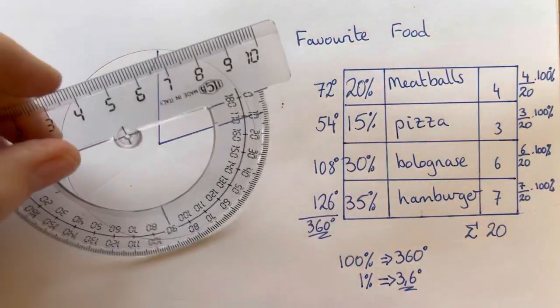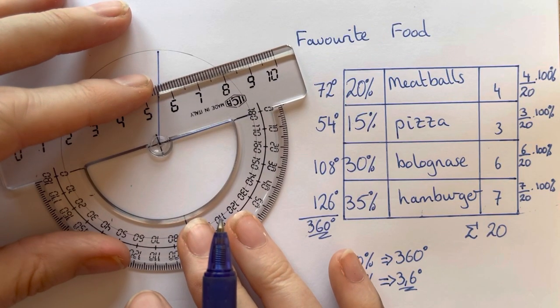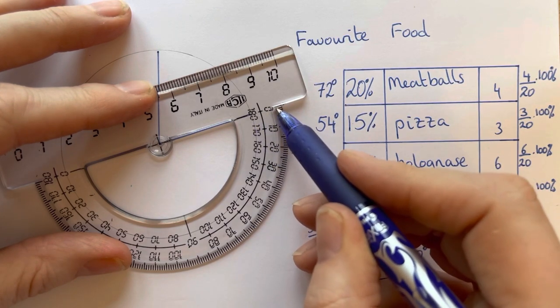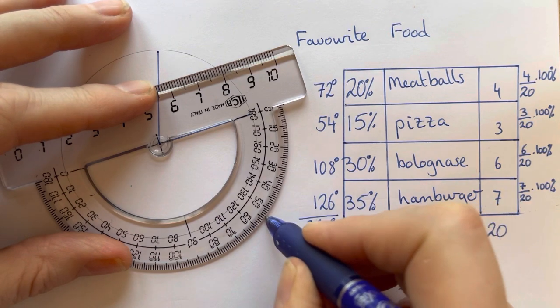Once we've got 72 degrees that's our meatballs, go from the edge of the circle to the middle. From that point we use this line now to measure our next pizza, which is 54 degrees. We start here again on zero, 20, 30, 40, 54 degrees would be exactly here.